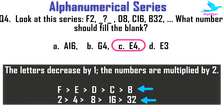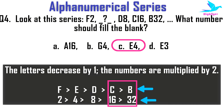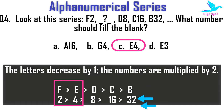D becomes C and 8 becomes 16 — 16 is twice of 8. Then C becomes B and 16 becomes 32, which is again twice of 16. So after F the alphabet will be E, and the number will be twice of 2, which is 4. So the required alphanumerical term is E4.